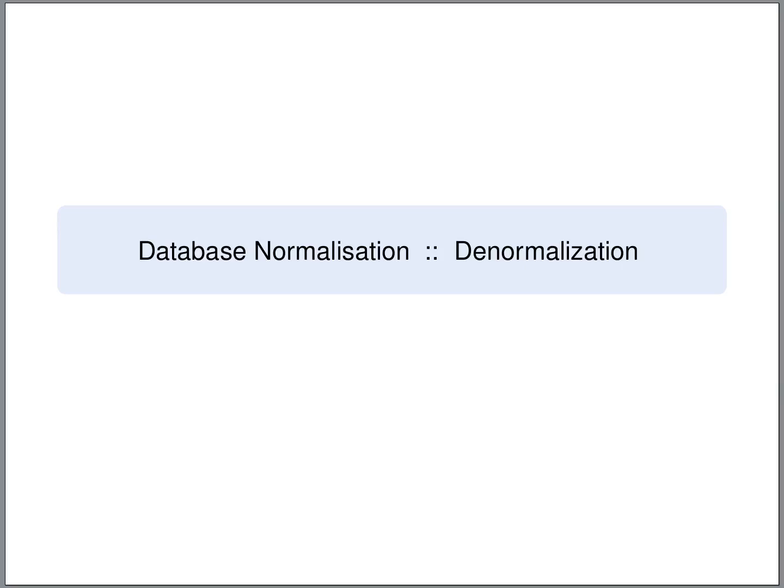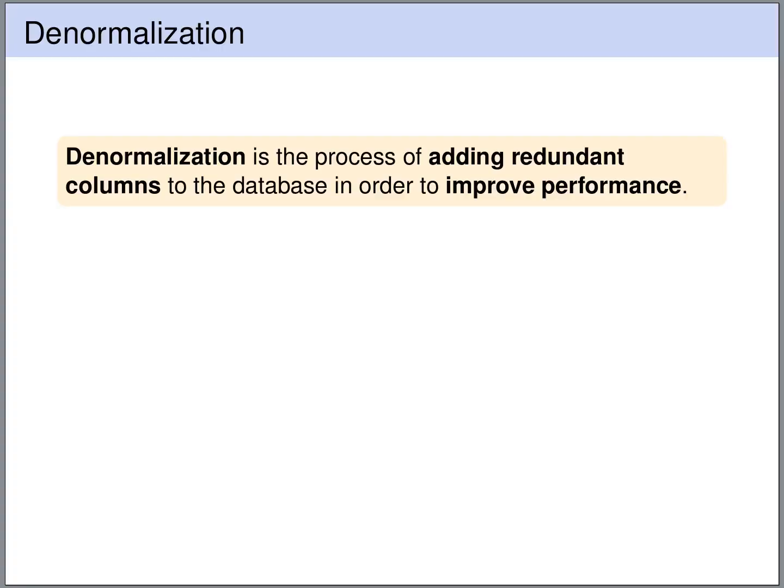The goal of database normalization is to avoid redundant storage. Sometimes, for the purpose of performance, it is necessary to violate the normal forms and to intentionally introduce redundant storage of information. This process is called denormalization. Denormalization is the process of adding redundant columns to the database in order to improve performance.